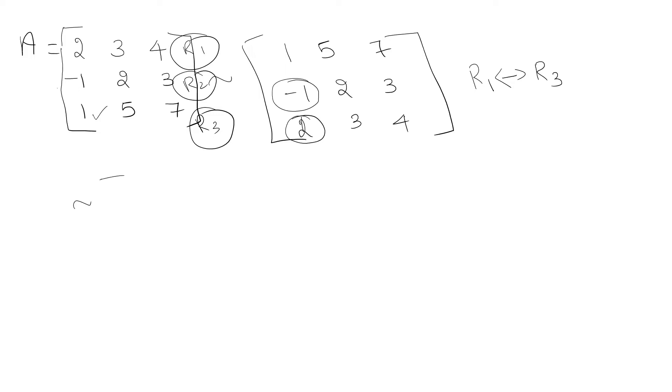I will write the first row as it is: 1, 5, 7. Now I am going to add -1 plus 1, which is 0; 2 plus 5, which is 7; 3 plus 7, which is 10. So I have done this.